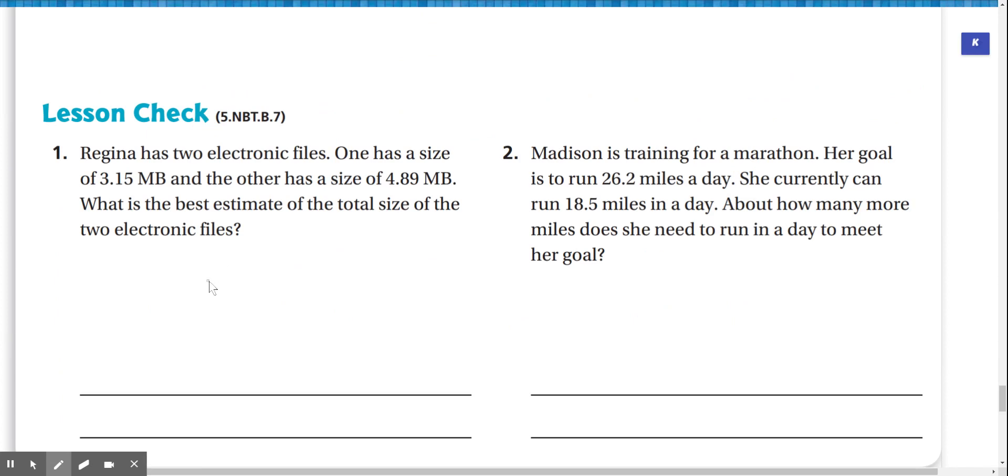Lesson check. Marina has two electronic files. One has a size of 3.15 megabytes and the other has a size of 4.89 megabytes. What is the best estimate of the total size of the two electronic files? So 3.15 rounds to 3, and 4.89 rounds to about 5. So 3 plus 5 is equal to 8. So it's about 8 megabytes.